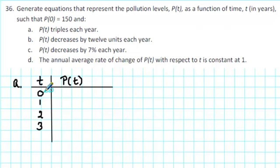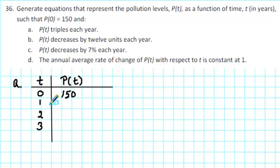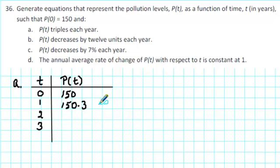We'll start with t equals 0 and then let t go up one year at a time. Initially the pollution level is 150, so in the first row we'll put 150. We're given that p of t triples each year, and to triple something we need to multiply it by 3. So in year one the pollution level will have increased to 150 times 3. Rather than finding the actual value, which would be 450, we'll leave it as 150 times 3.